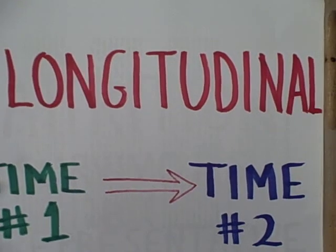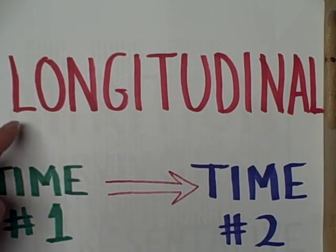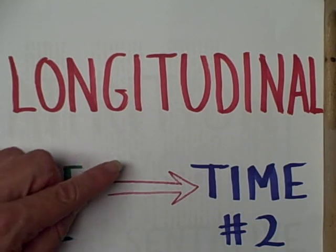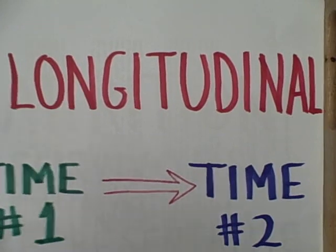The other approach is to do a longitudinal research project. Here we take just one cohort and study it over a long time period. We measure them at time 1, then wait a number of years and reassemble our sample to measure them again at time period 2.